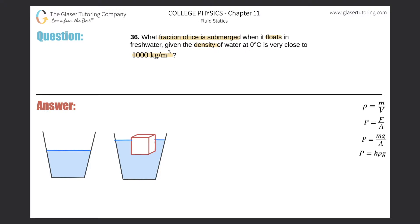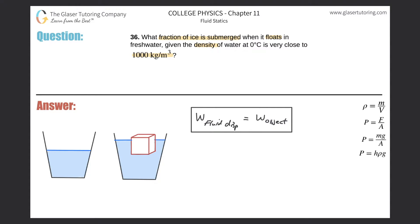The main concept here is Archimedes' principle, which basically states this: the weight of a fluid displaced will equal the weight of the object placed in that fluid. The weight of the fluid displaced is equal to the weight of the object placed in the fluid — not the portion of the object that's submerged, but the entire weight of the object.